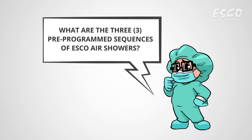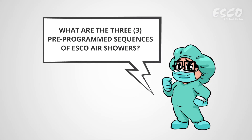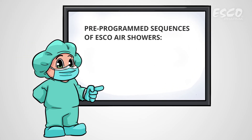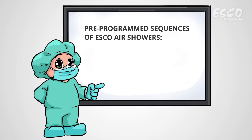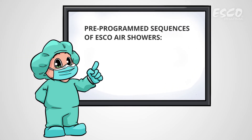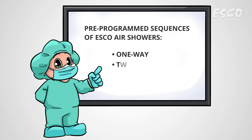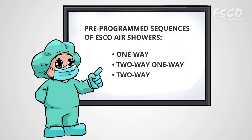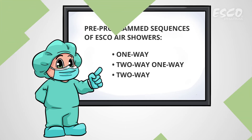What are the three pre-programmed sequences of Esco air showers? The following are the pre-programmed sequences: one-way, two-way one-way, and two-way.